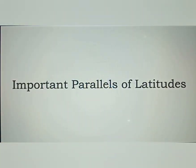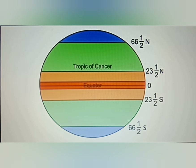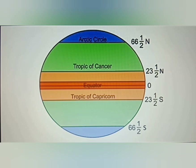Important parallels of latitudes: besides the equator, the North Pole and the South Pole, there are four important parallels of latitudes. First, the Tropic of Cancer at 23 and a half degrees north. Second, the Tropic of Capricorn at 23 and a half degrees south. Third, the Arctic Circle at 66 and a half degrees north.